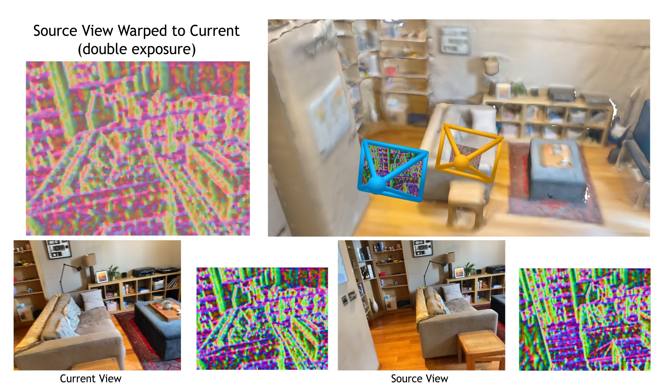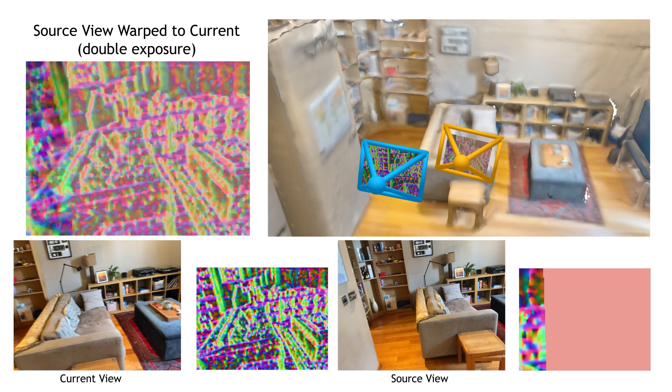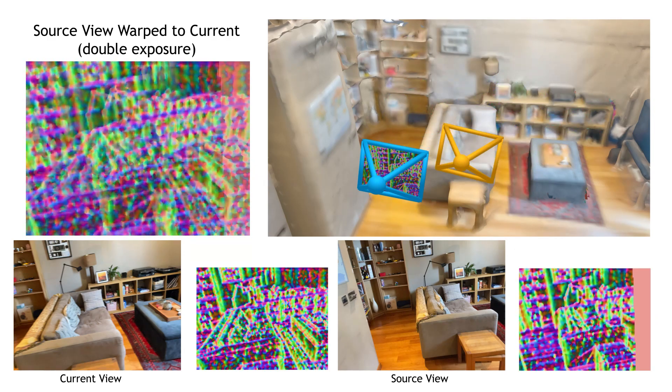First, let's describe a multi-view stereo baseline. Following standard practice, we extract features from every frame and warp source features to every hypothesis depth plane in the current camera's view, where they can then be compared, and an estimate for depth made.